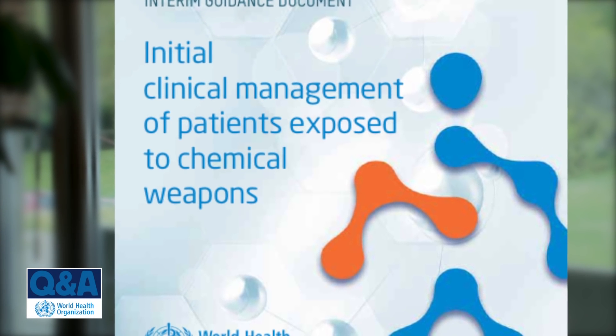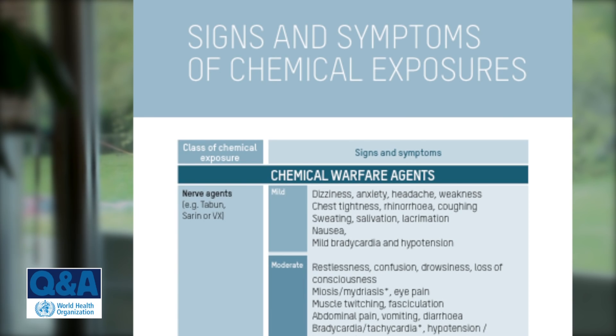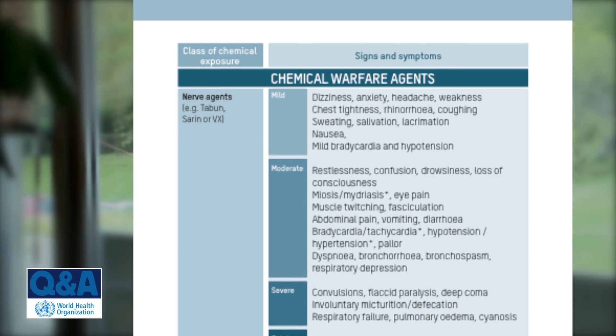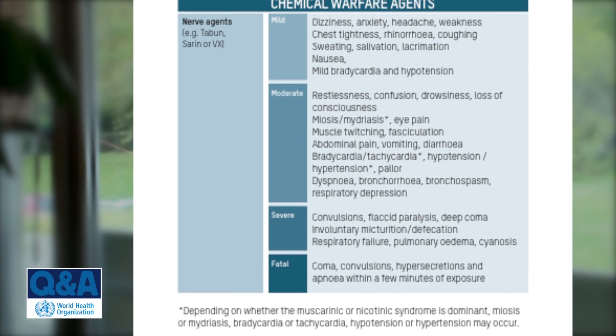Other chemical classes include the nerve agents, which primarily attack our central nervous system and have an impact on our ability to breathe and on our muscular functioning. It is really with nerve agents where you see the highest cases of deaths among exposed populations. Other chemicals tend to have much lower case fatality rates.